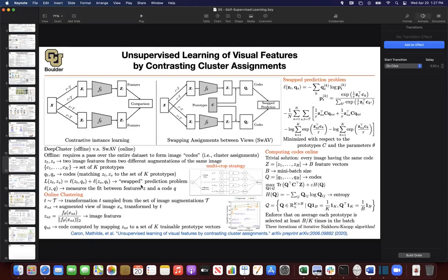Last session, we stopped here with the swap, swapping assignments between views. The idea was to improve upon deep cluster. Deep cluster was an offline algorithm. You needed to push your entire data set through your neural network and then do your clustering.